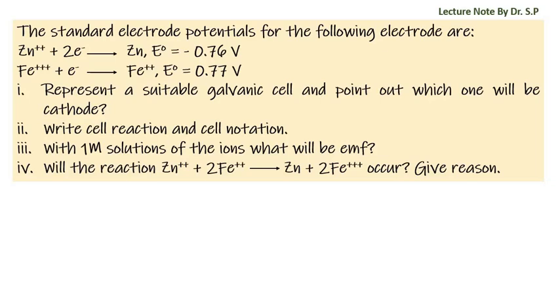We have a question. The standard electrode potentials for the following electrodes are: Zn²⁺ + 2e⁻ → Zn, E° = -0.76 V, and Fe³⁺ + e⁻ → Fe²⁺, E° = 0.77 V.